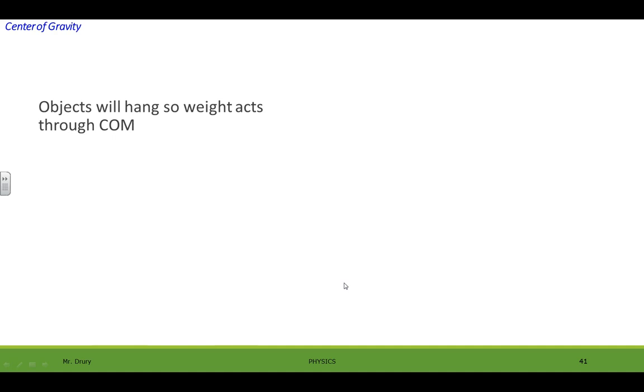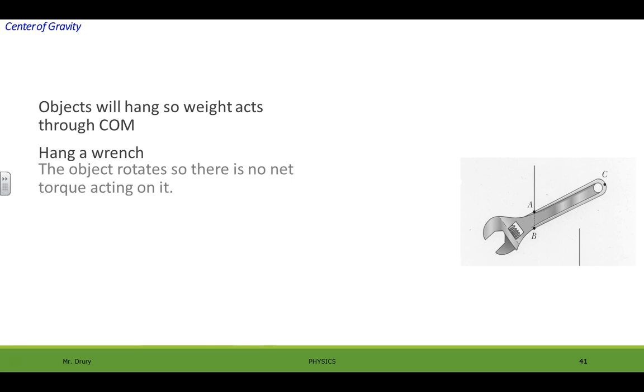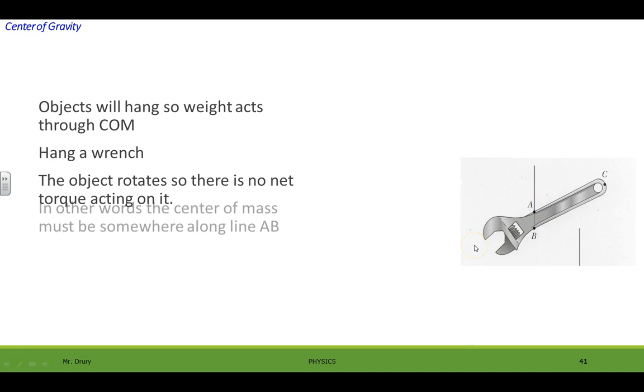Objects will hang so its weight acts through its center of mass. And why is this? Well I'll try to explain it. First we're going to hang a wrench. It will rotate back and forth so that the weight has to be somewhere along this line. How do we know it's along that line?